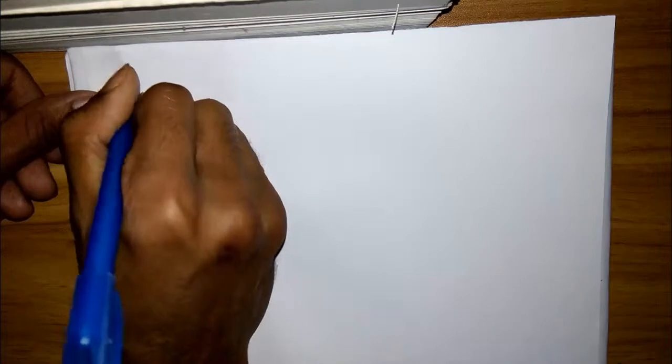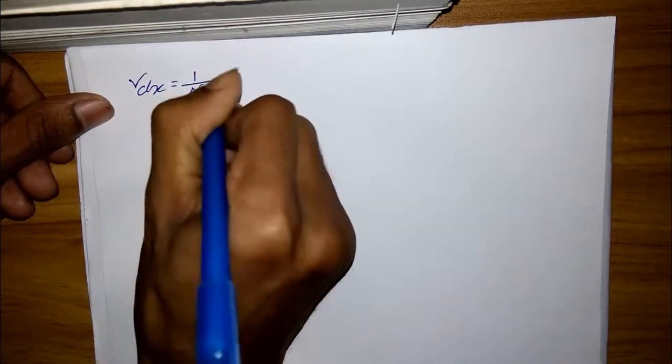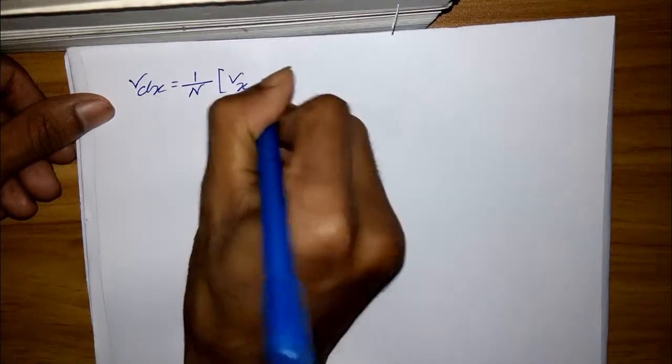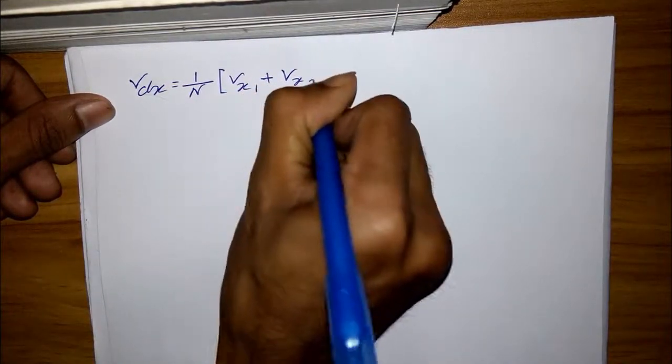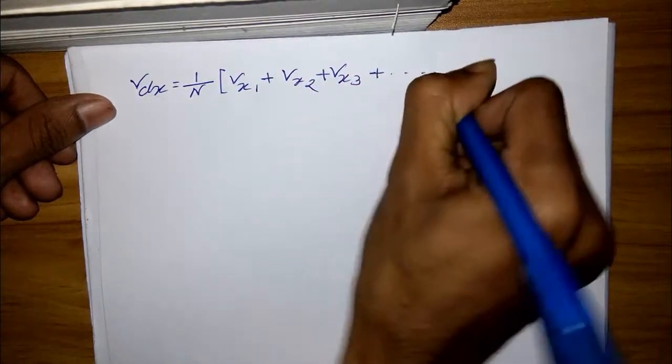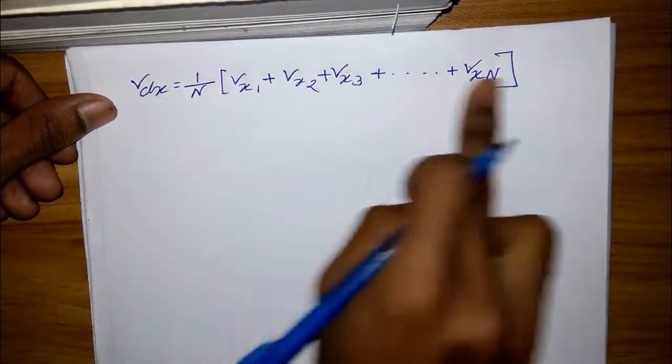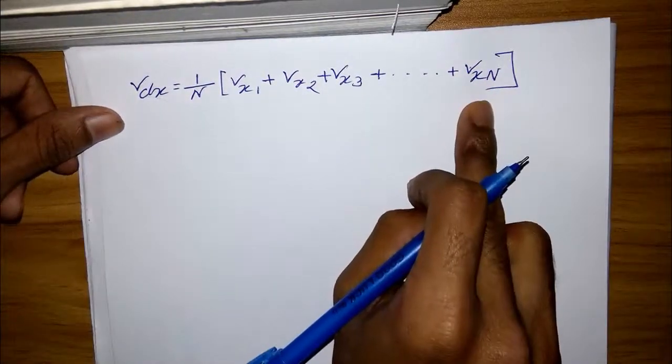Now if v_dx average over many electrons, v_dx is the average velocity over many electrons, then we can write v_dx like 1 by n times (v_x1 plus v_x2 plus v_x3 plus dot dot v_xn) for n number of velocity or electron.